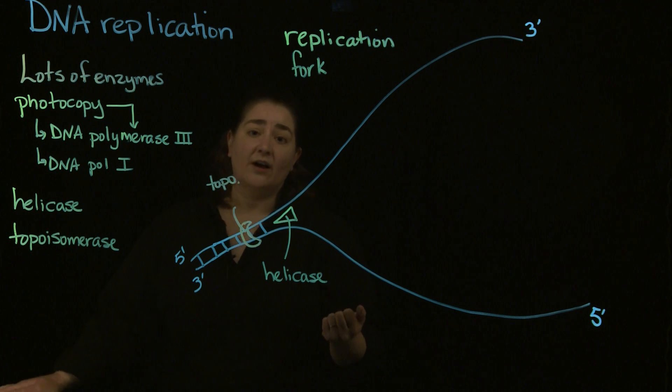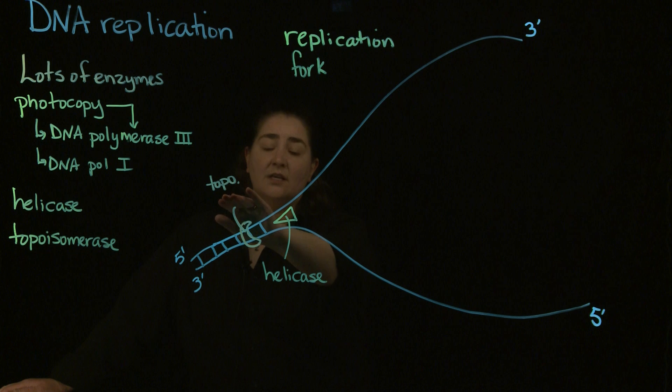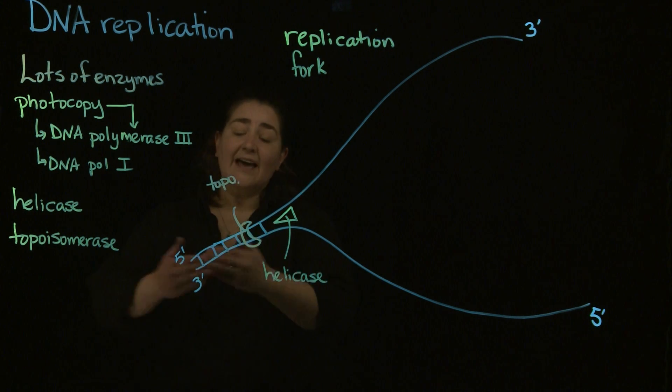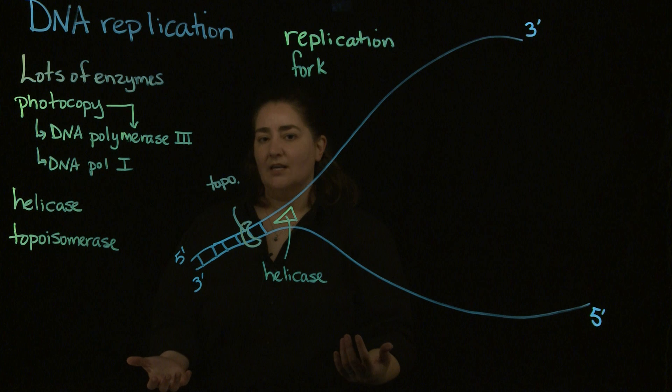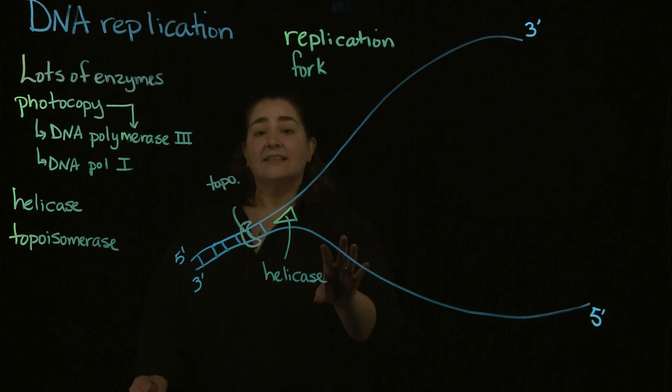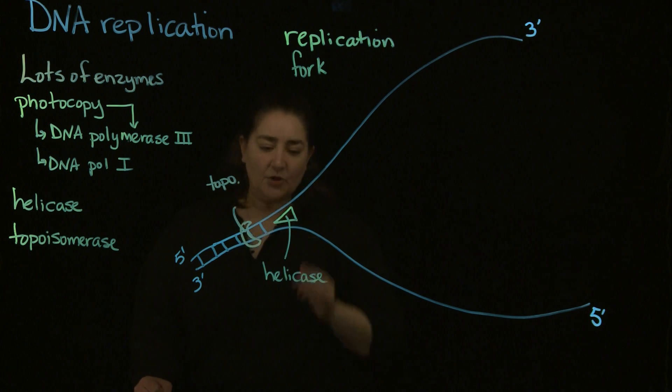What topoisomerase does is it kind of makes little nicks in the DNA so that it can unwind, so that you don't get torsion or twisting that happens as that replication fork is opening. If you're taking microbiology lab, novobiocin is an antibiotic that you're going to work with in the lab. Novobiocin inhibits topoisomerases. That's how it interferes with bacterial growth. It interferes with bacterial growth because it's interfering with this DNA replication process. Essentially what happens if topoisomerase isn't active, that DNA molecule, that circular genome is going to get all twisted up. All of the proteins that are needed in order to replicate aren't going to be able to get in.